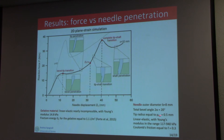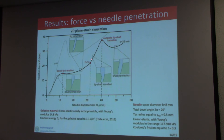We assumed Coulomb friction with a coefficient of 0.3. For comparison, it is interesting to show the force-displacement curve for zero offset and the curve for a 32 mm offset. There are different stages in the curves depending on the level of penetration of the needle in the tissue.